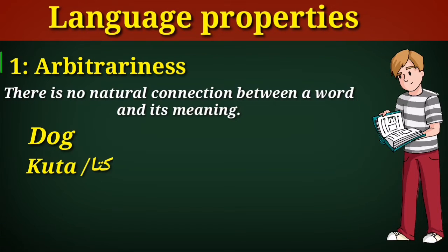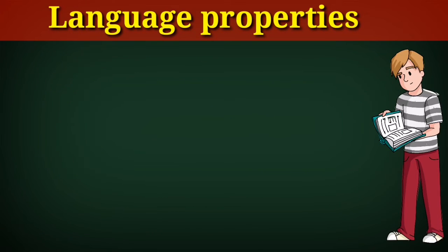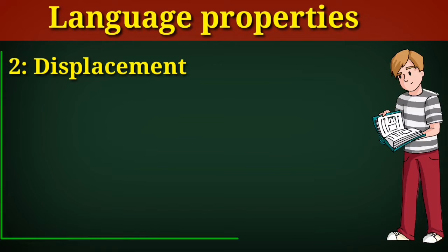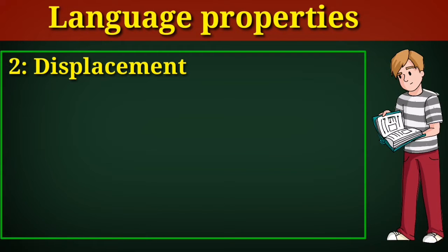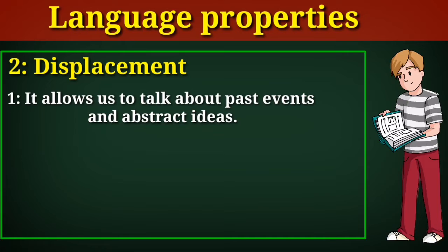The next property of a language is displacement. What is basically displacement? It is a unique property of human language because it allows us to talk about things which are not present in the immediate environment.